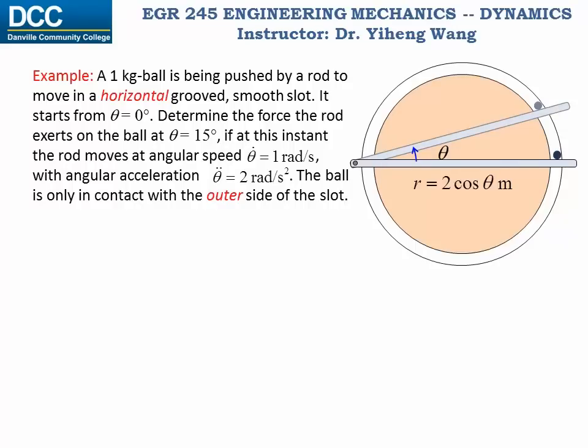We're going to use polar coordinates to solve this problem. We need to first set up our coordinate system. We choose this point to be our origin, and this line to be the reference line since it corresponds to when theta equals 0 degrees. Therefore at the instant that theta equals 15 degrees, this is our radial axis and this is our transverse axis.